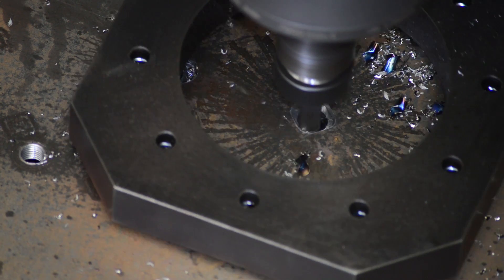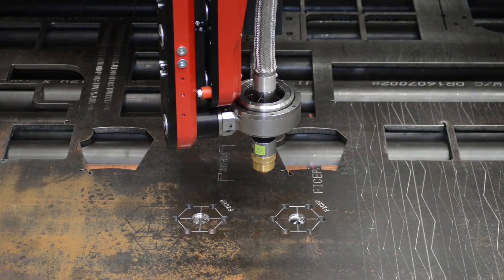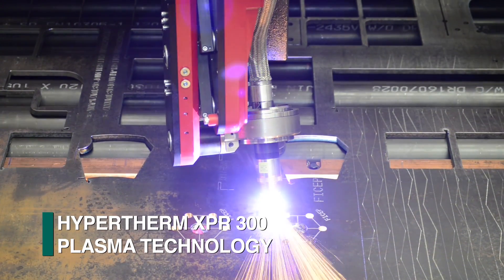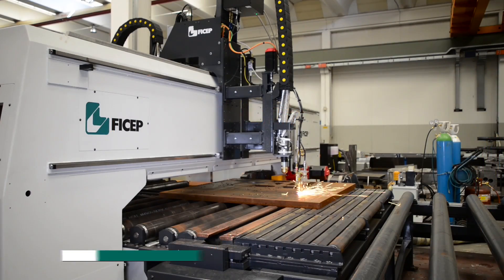After completion of the desired spindle operations, the stock plate proceeds toward the thermal cutting zone of the Tipo-G. Thermal cutting can be achieved with a combination of multiple Hypertherm plasmas and one or two oxyfuel torches to accommodate thicker plates.